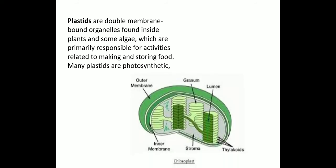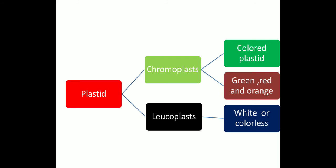Many plastids are photosynthetic but not all. For Class 9, the main plastid to know is chloroplast, because chloroplast is present in all vegetation and carries out the process of photosynthesis, which is a very necessary process in plants.